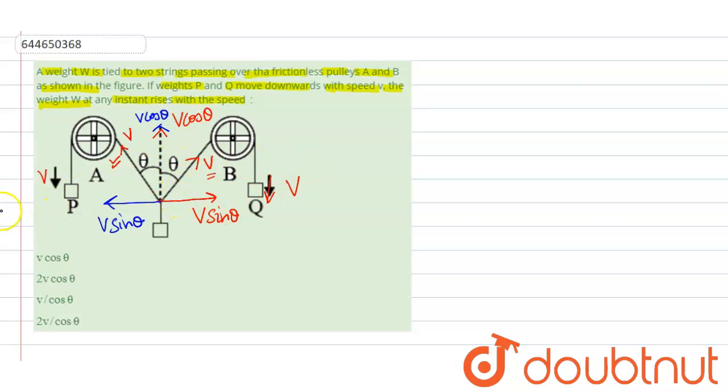Now if we see in x direction, the net velocity will be v sin theta minus v sin theta is equal to 0 in x direction.